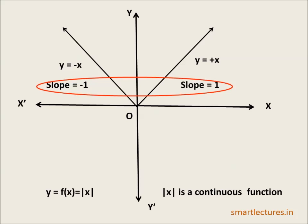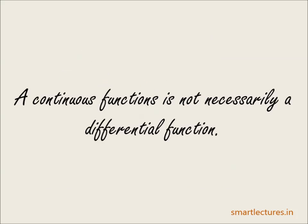From this example it's clear that although the function |x| is a continuous function, it is not differentiable at the point 0 or at the origin. This also means a continuous function is not necessarily a differentiable function — a function may be continuous at a point but may not be differentiable at that point.